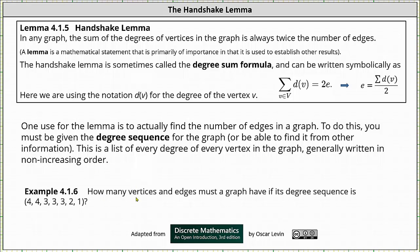Looking at an example, let's determine how many vertices and edges a graph must have if its degree sequence is given as (4, 4, 3, 3, 3, 2, 1).